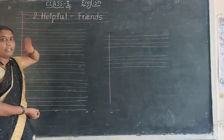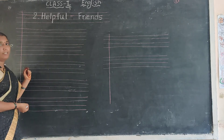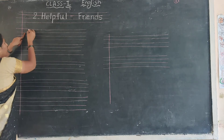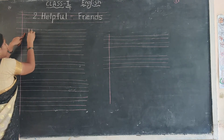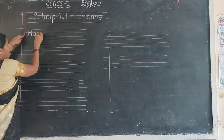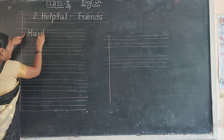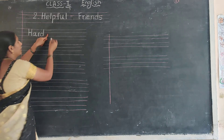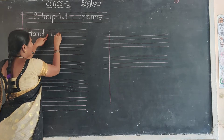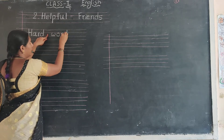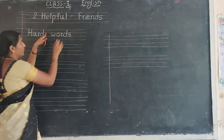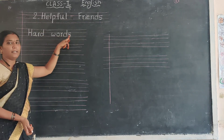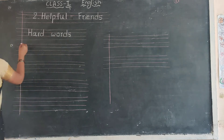This is the second lesson in your textbook. Now write Hard Words in the next line. After the margin, give one finger gap. Capital letter H. H-A-R-D. Hard. Finger gap. W-O-R-D-S. Words. Hard Words. H-A-R-D, Hard. W-O-R-D-S, Words. Hard Words.